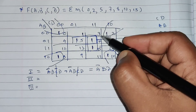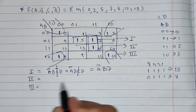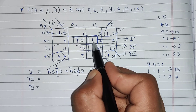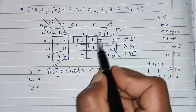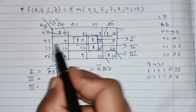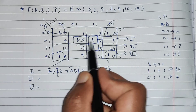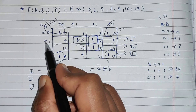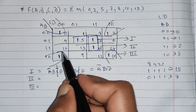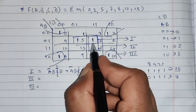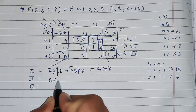We can simply check which terms are constant in a group. For group number 2, C, D is 1,1 in both cells, B is 1 in both cells, and only A is changing (0 and 1). That's why we cancel A, and from group number 2 we get BCD.